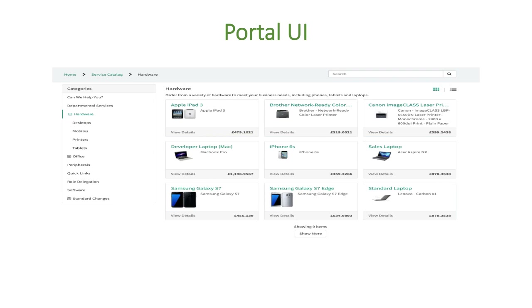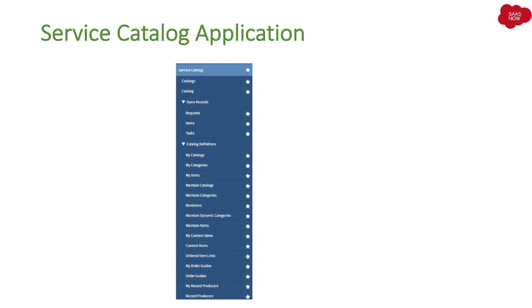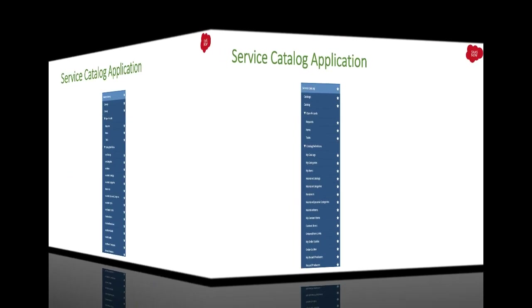For example, facility services or software installation — you can request everything if it is onboarded in your service catalog. The service catalog application is specifically for service catalog. ServiceNow has a different application menu called Service Catalog that is specifically designed and developed so you can administer service catalog and request management in ServiceNow. Let me give you a walkthrough of the service catalog application and modules.